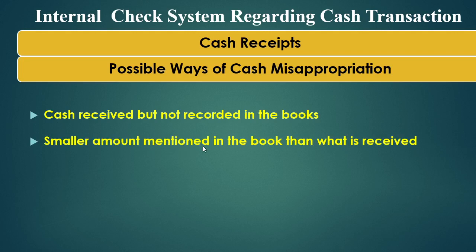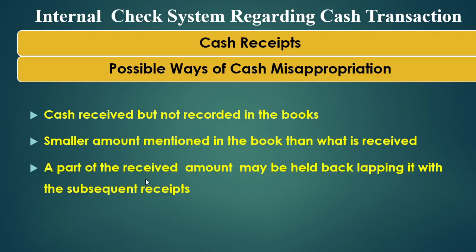The second way is a smaller amount mentioned in the books than what is actually receivable. For example, a person gives 5,000 rupees to the cashier but the cashier records only 500 rupees. The remaining balance of 4,500 rupees is used by the cashier for personal purposes. The third way is that a part of the received amount may be held back by lapping it with the subsequent receipt.